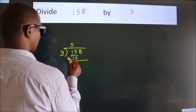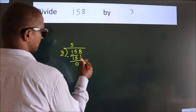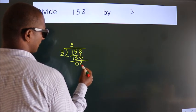Now, we should subtract. We get 0. After this, bring down the beside number. So, 8 down.